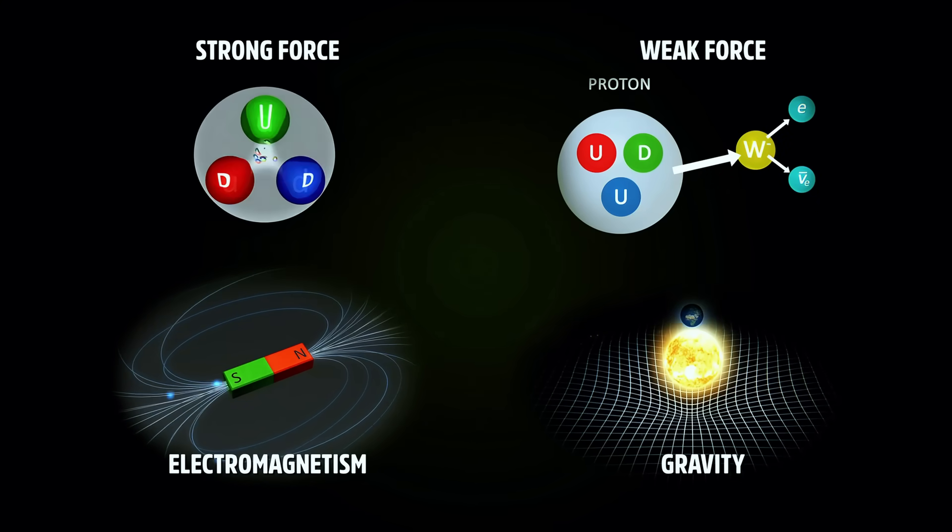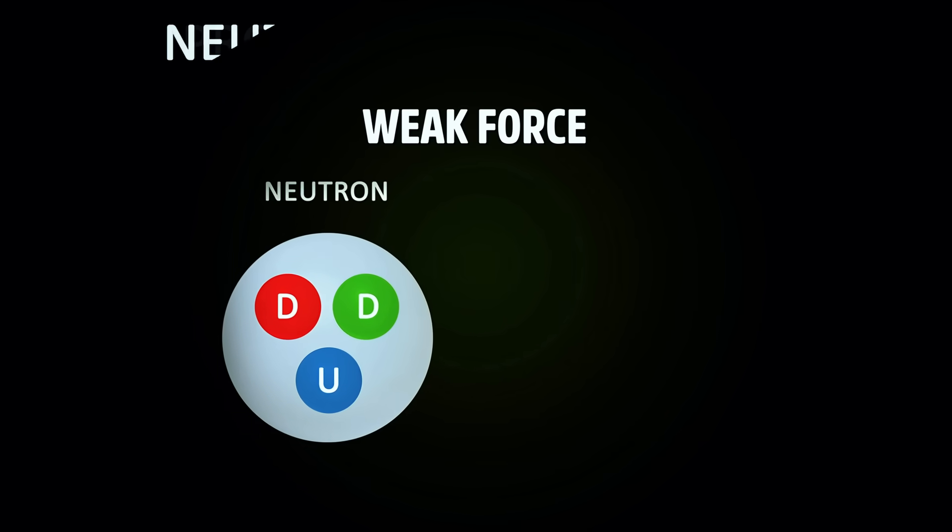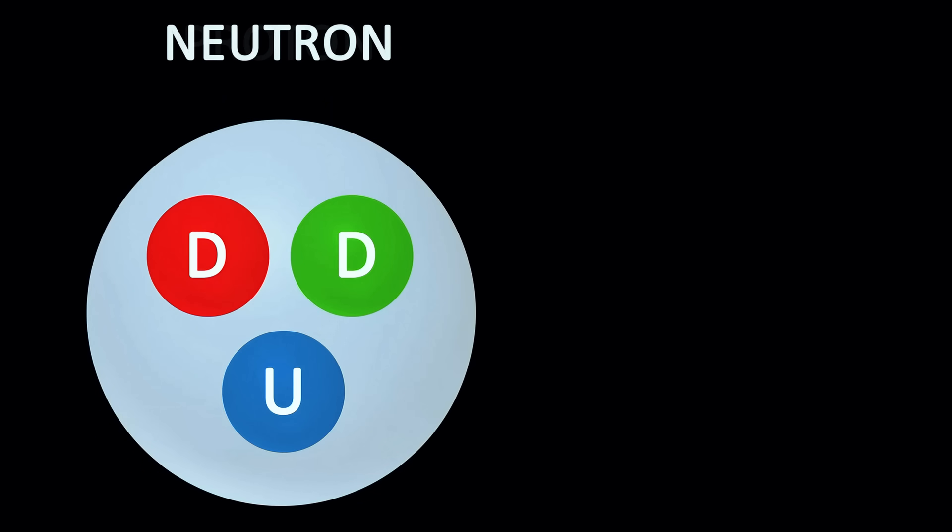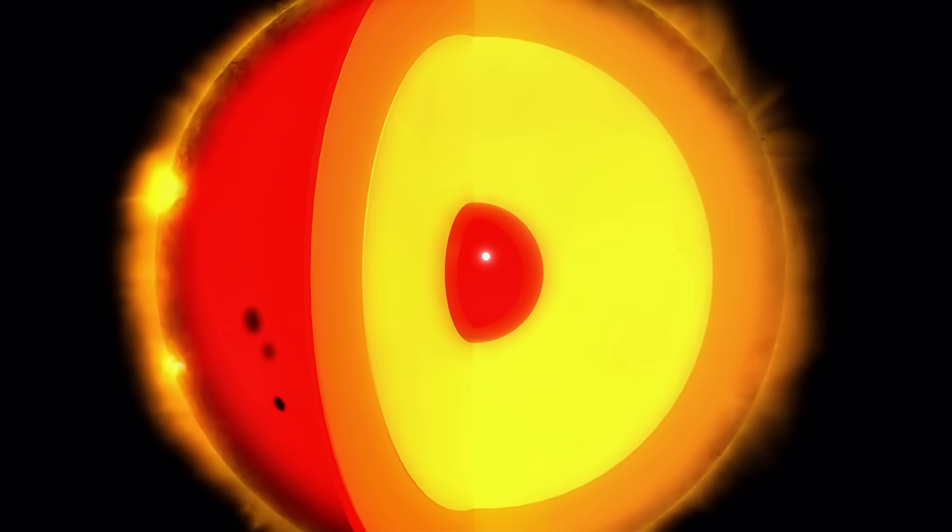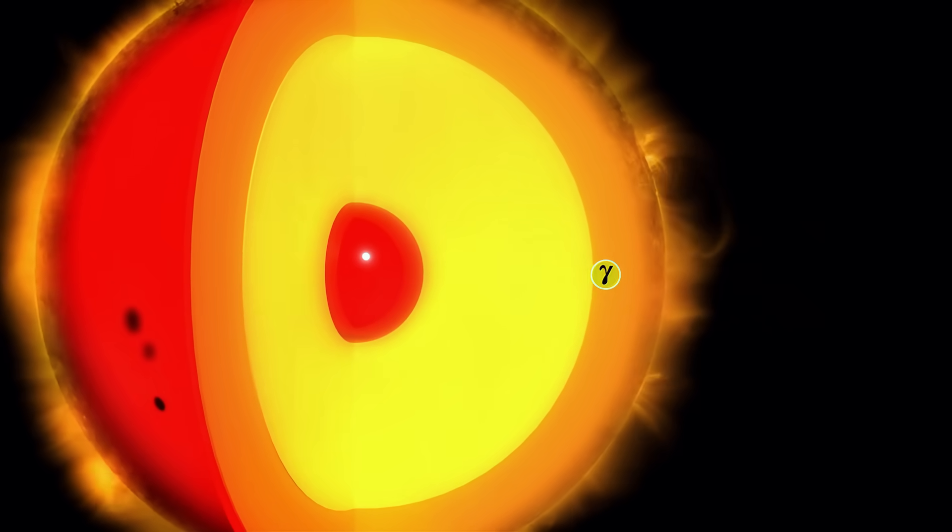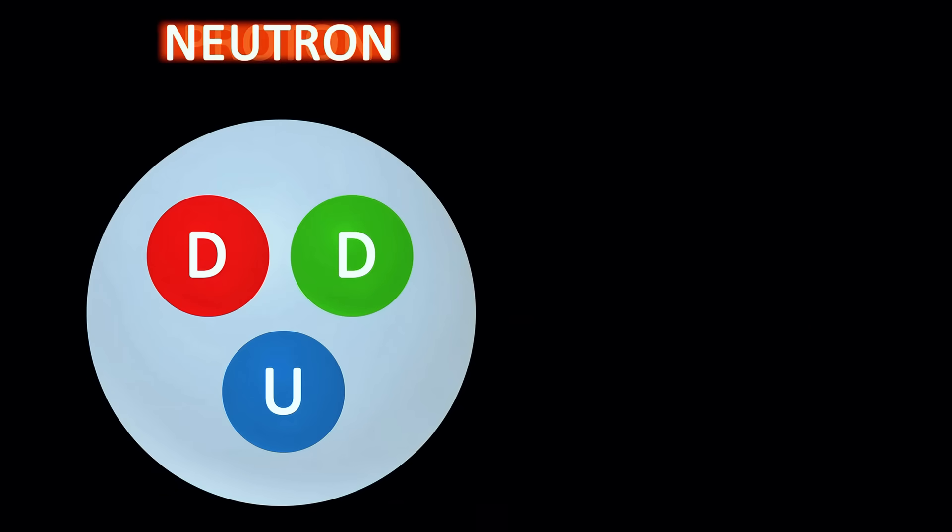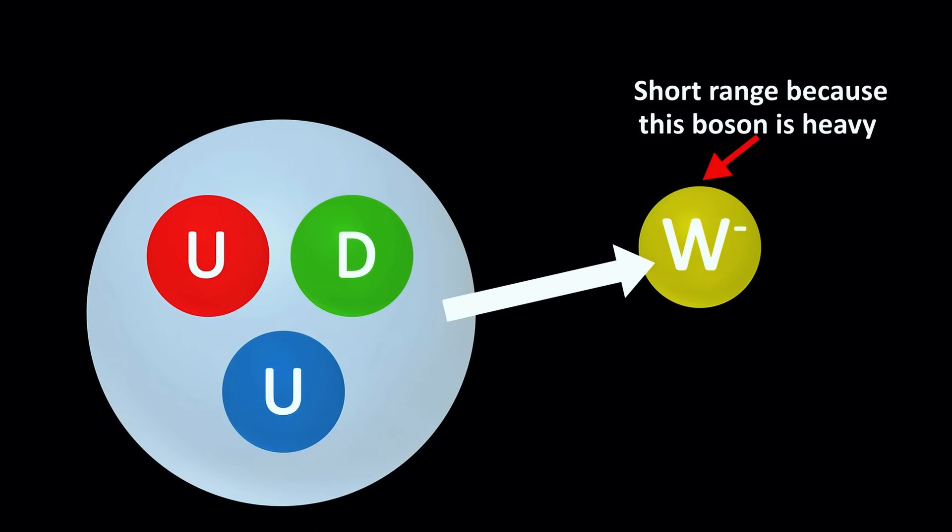Finally, there is the weak force, which allows changing one type of fundamental particle into another. This is how protons can transform into neutrons and vice versa in beta decays. It also initiates the sun's fusion chain. It is short range because it is carried by the relatively heavy W and Z bosons. Heavy mediators imply short range forces.